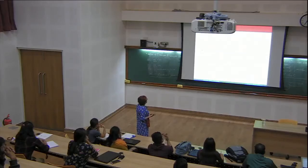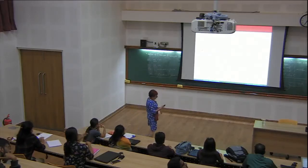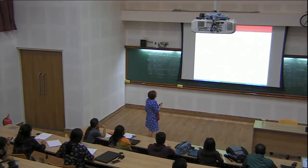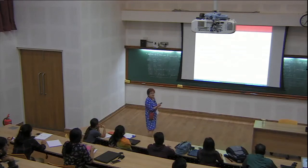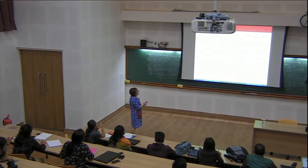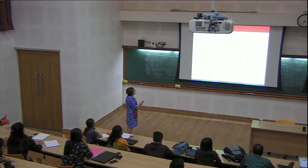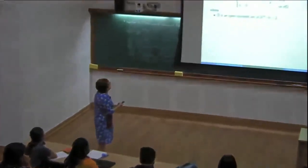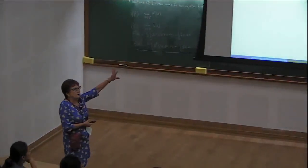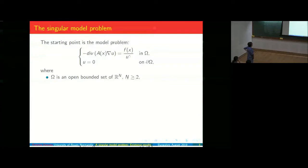So this is the model problem. Instead of what we had before — minus divergence of gradient of U equal to S — we now have also this term in the denominator, U to the power gamma, with the Dirichlet condition. Let us look at the model in a fixed domain omega, where omega is an open bounded set.